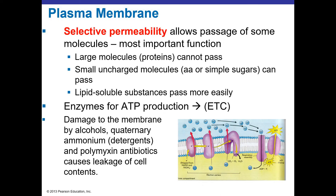The major function of the plasma membrane is selective permeability. Things that are large and charged, like proteins, don't get across. Things that are small and uncharged, like simple sugars or amino acids, are more easily able to get across. Because like dissolves like, we also see that lipid-soluble substances can pass more easily through the membrane.